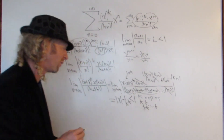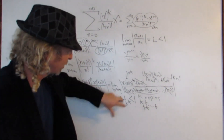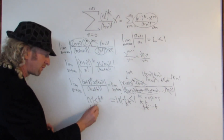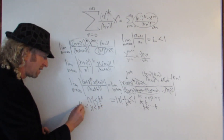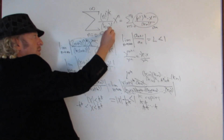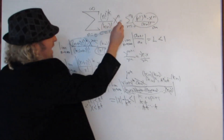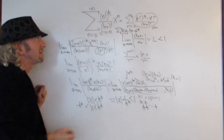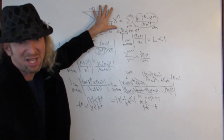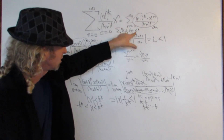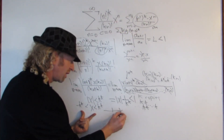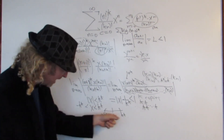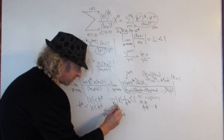You want this to converge, so you set it less than 1. So you have the absolute value of x times 1 over k to the k less than 1. Multiply both sides by k to the k and you get the absolute value of x less than k to the k. So you have an interval from negative k to the k to k to the k. This is a power series centered at 0, because it has the form of something times x minus 0 to the n, where the coefficient is independent of x. So the center is 0, and you can see that r equals k to the k.